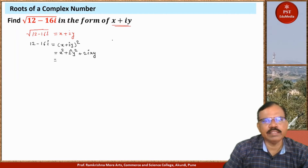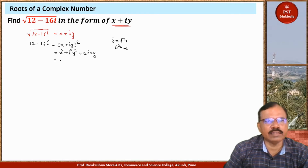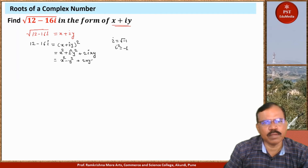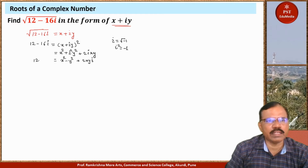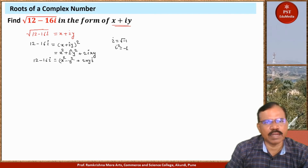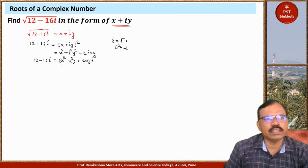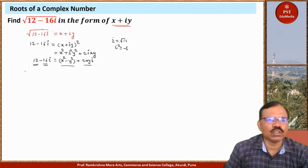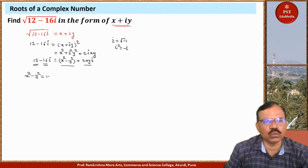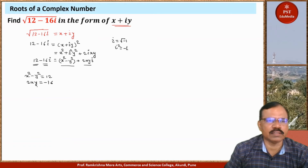Since i squared equals minus 1, we can write this as x squared minus y squared plus 2xy times i, and this equals 12 minus 16i. Now equating real parts and imaginary parts on both sides, we get equation 1: x squared minus y squared equals 12, and equation 2: 2xy equals minus 16, so xy equals minus 8.